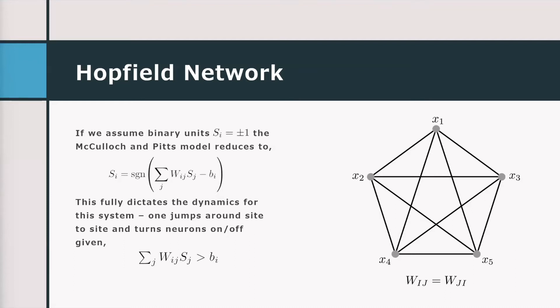Having binary units reduces the model to a nice function: instead of a step-side function, you just have the sign of the sum. Basically you go around from node to node, sum up all the weights with all the inputs going into one node, and if it's higher than the bias value — the threshold — you set spin up; if it's lower, you set spin down. This fully dictates the dynamics for the Hopfield network. Instead of passing through layers like a normal neural network, you jump from node to node updating spins — it's a very simple model.